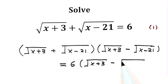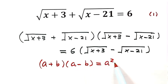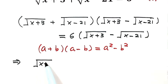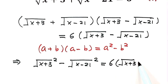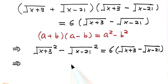For the left hand side, we're going to use the formula: a plus b times a minus b equals a squared minus b squared. Using this formula, the left hand side becomes the first term — square root of x plus 3, squared — minus the second term — square root of x minus 21, squared. The square and square root cancel on both terms, and simplifying the right hand side gives 24.